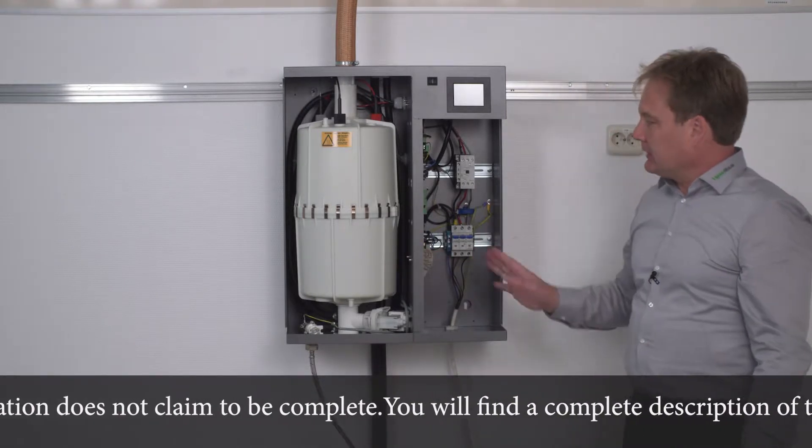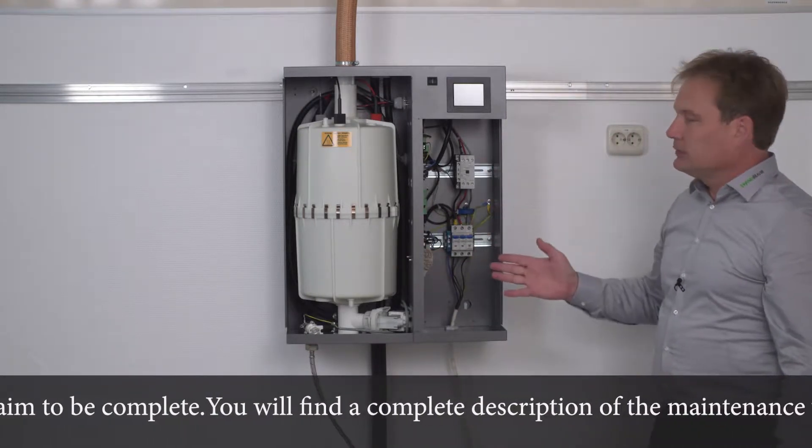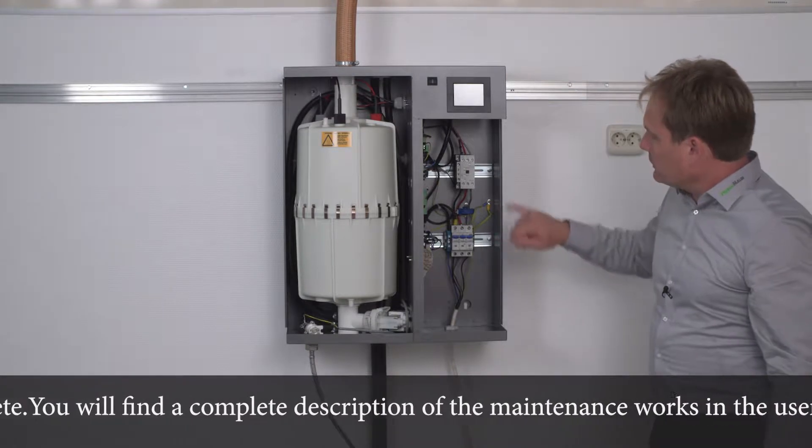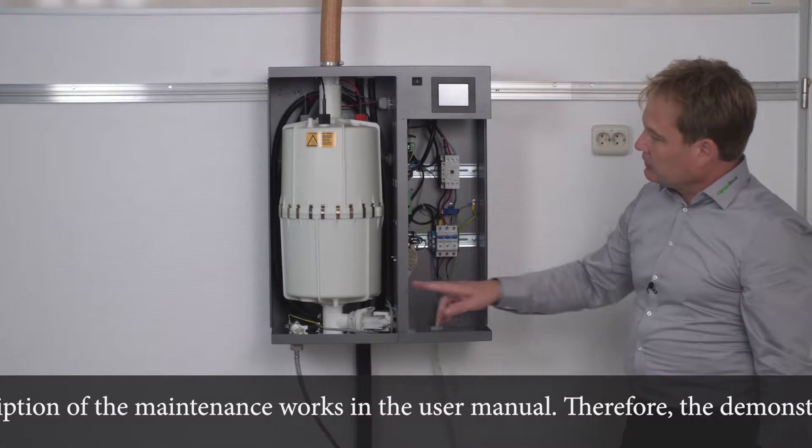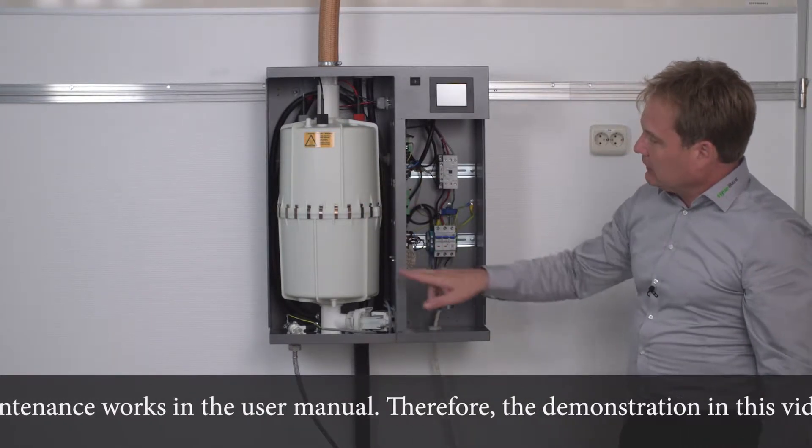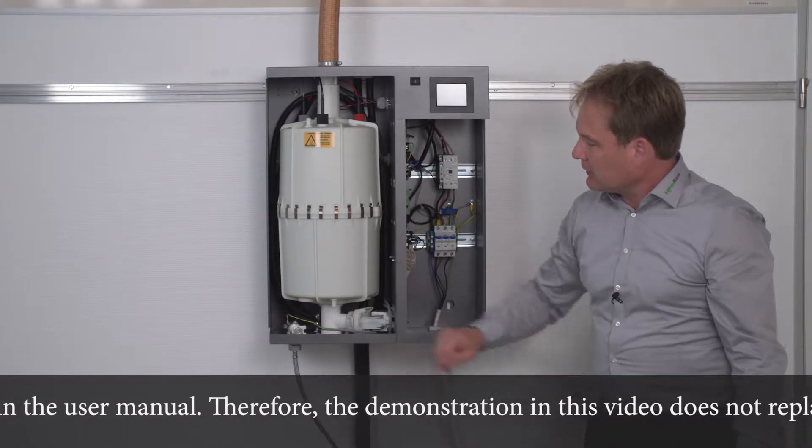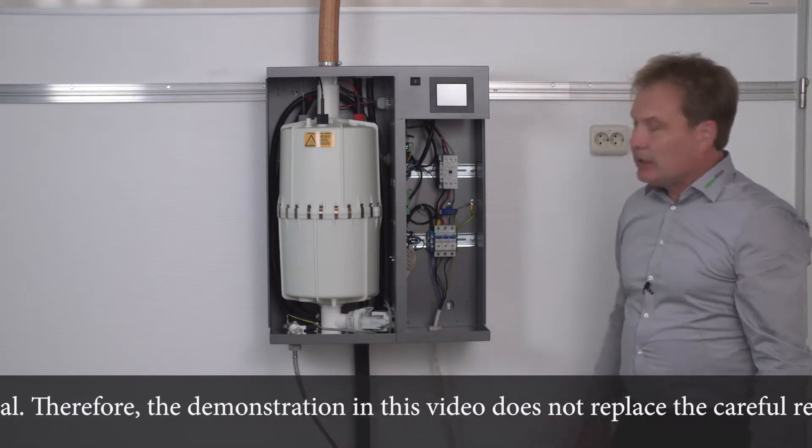The unit is divided into two parts. On the right is the electrical side with circuit breaker, main contactor, cables, terminals and electronics. And on the left side a steam compartment with steam cylinder, a water inlet solenoid valve and a blowdown pump.